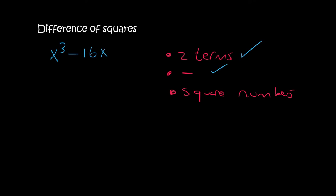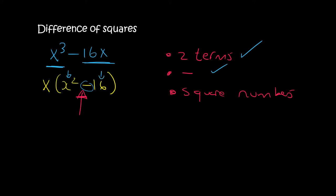If you were asked to factorize x cubed minus 16x, you can't do difference of squares directly because x³ is not a square number and 16x is not a square number either. However, when factorizing you should always use common factor first if you can. The common factor here is x, so you take out the x and you're left with x squared minus 16 inside the bracket. That's two terms separated by a minus, and each is a perfect square — x times x gives x squared and 4 times 4 gives 16. So we leave the x outside, open two brackets, and write x and x, 4 and 4, one with a minus and one with a plus. Please remember: always try common factor first.